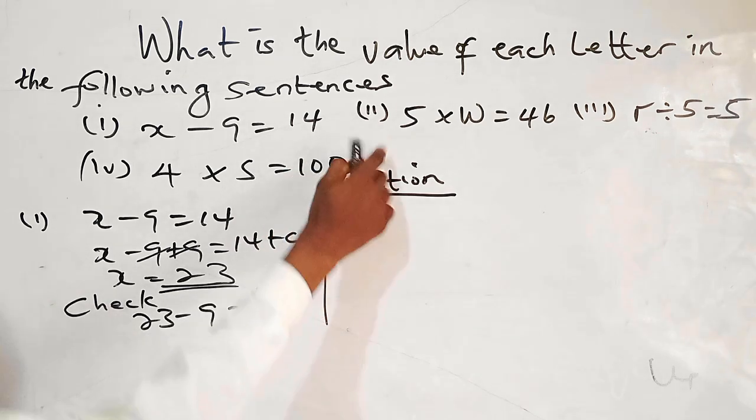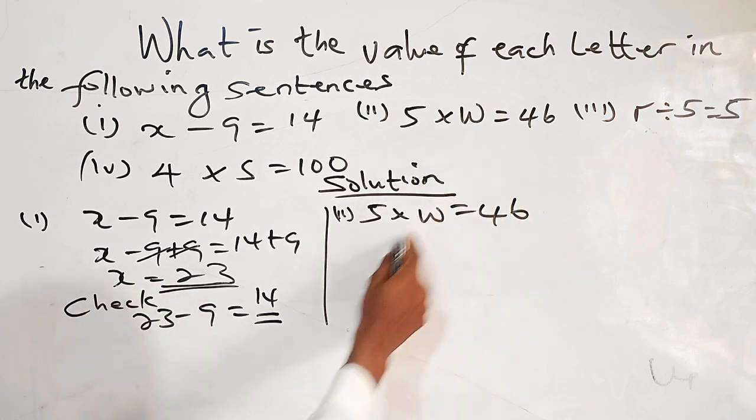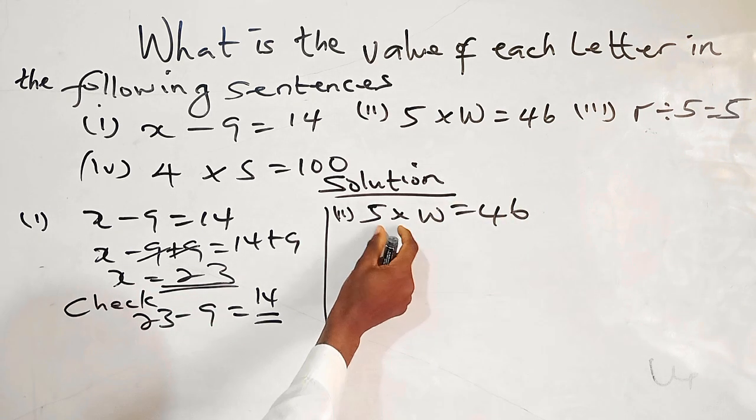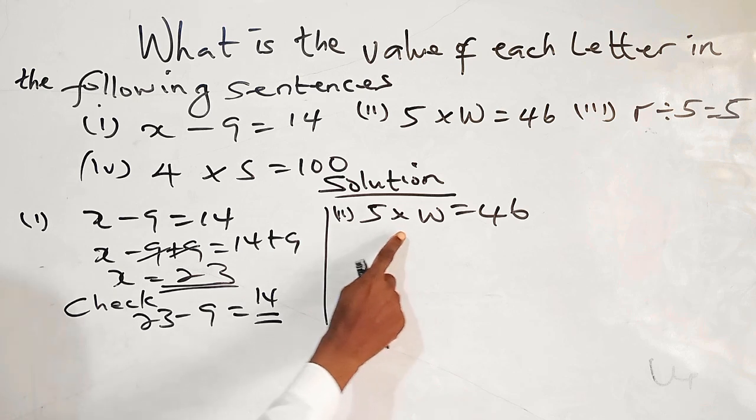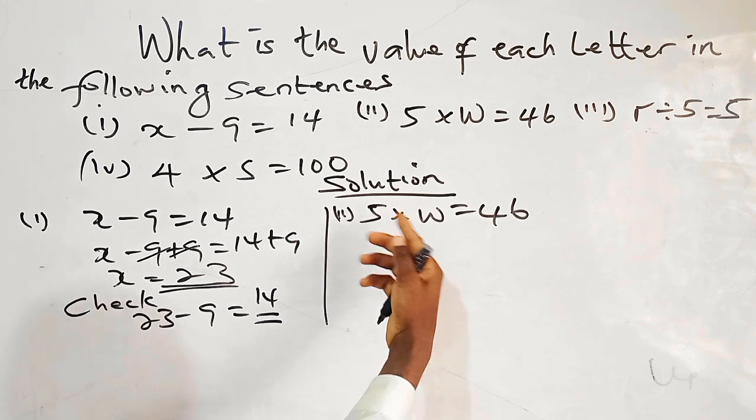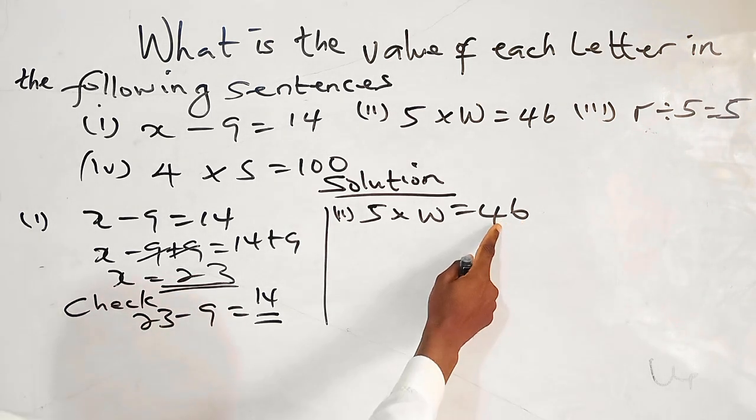So for the second one, we have 5 times W equals 46. So what do you multiply with 5 that will give us 46? We don't know. So since we have multiplication and we have to multiply something with 5 to have 46, all you can do now is to divide this with this.